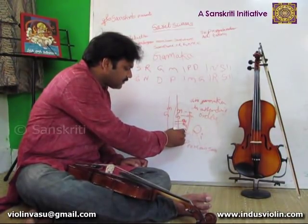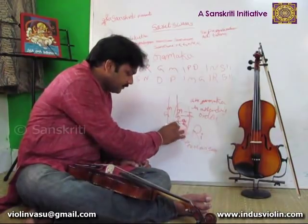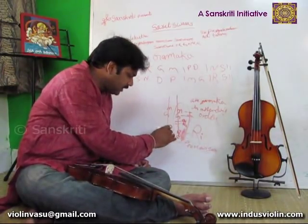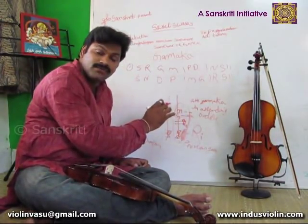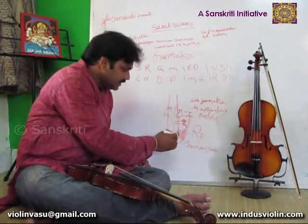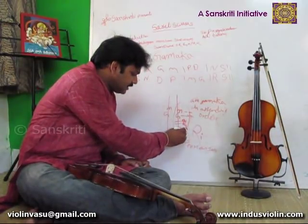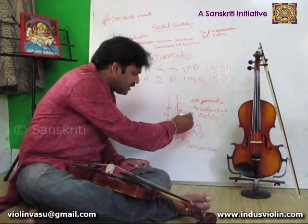When we are going from ri to ga, give gammakam to only ri. The gammakam for ri should start in sa: sa — sa li ga ma.